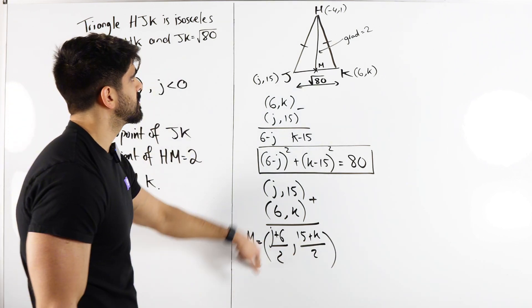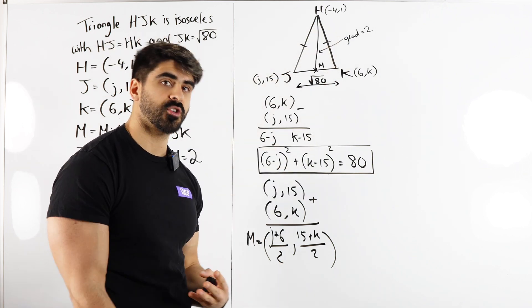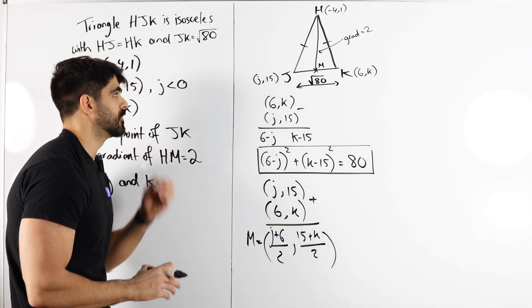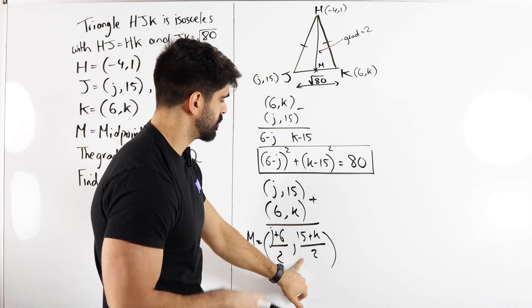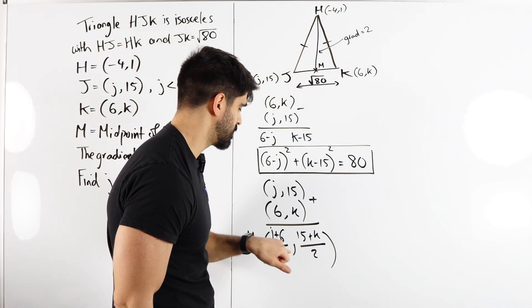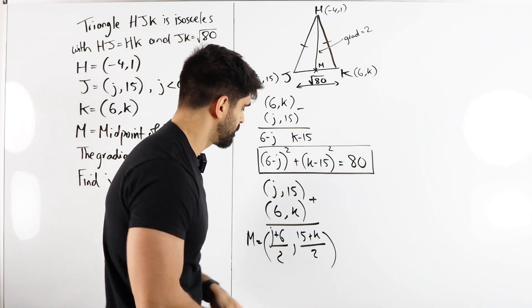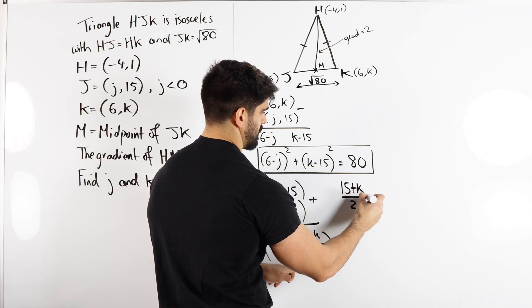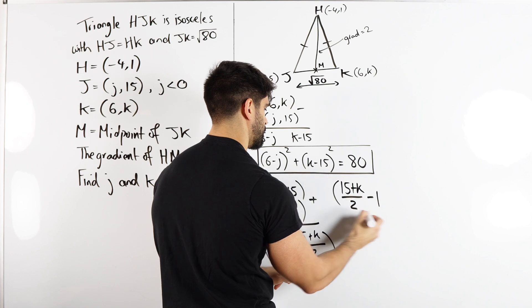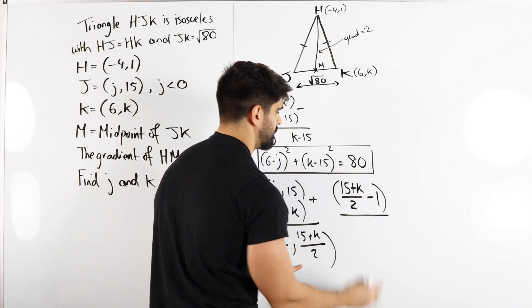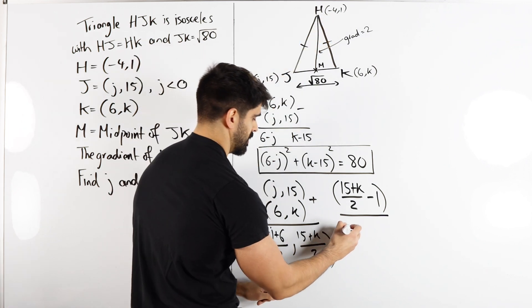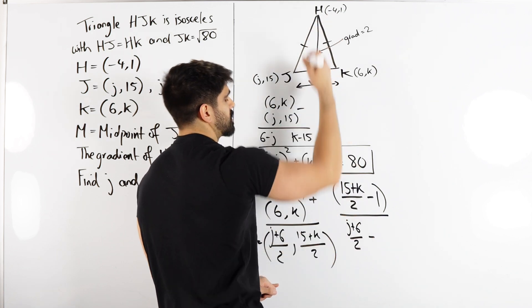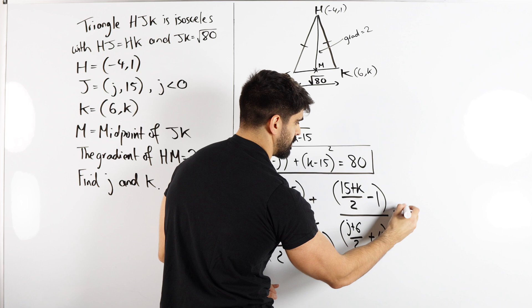The gradient between this and this is 2. To find the gradient, we subtract the coordinates and then do the change in Y over the change in X. We're doing (15+K)/2 subtract 1 divided by (J+6)/2 subtract -4 which becomes plus 4. And that equals 2.